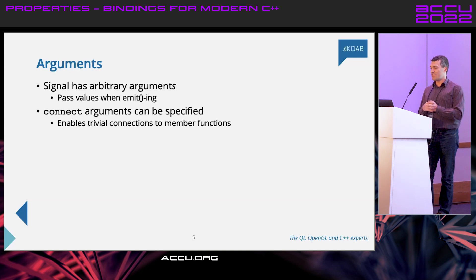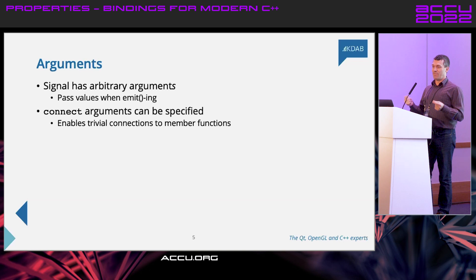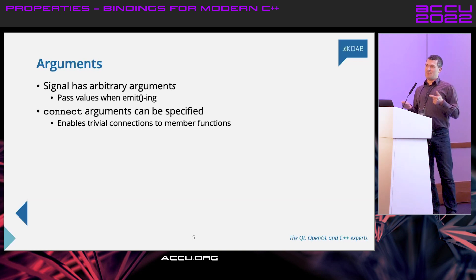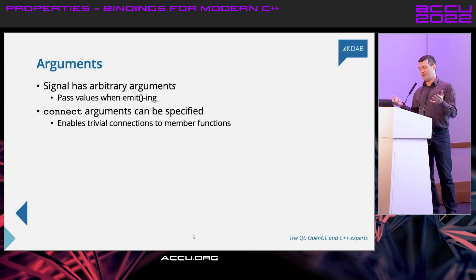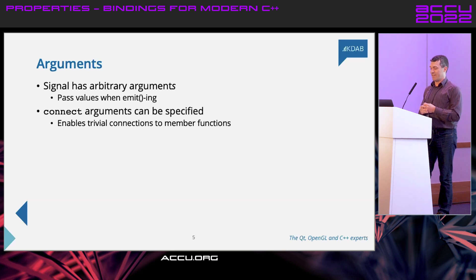Signals have arbitrary arguments which you can specify when emitting. So you can say a signal has an integer parameter, and when you emit it you provide that parameter. When connecting you can also provide arguments to the connecting function. The really important thing is that this means you can trivially connect to member functions, because your member function has an implicit first argument which is your this pointer. If you can supply that as a parameter to your connect call, you get this nice binding between objects. There's nothing here you can't do in Boost Signals — it's just a similar implementation.